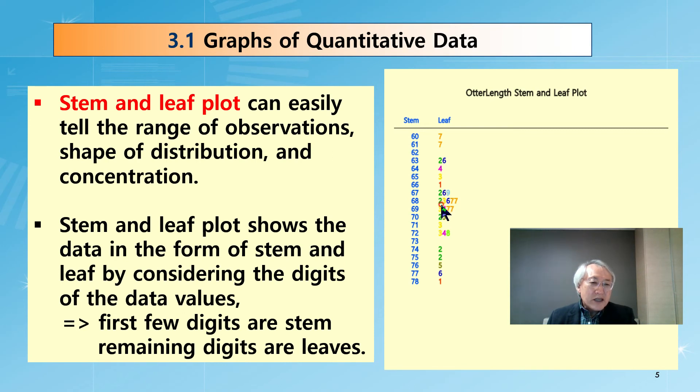The last digits - they say it's 2, 3, 6, 7, 7, 7. That means in this category, there are five data. It looks like a histogram, but we are using the natural grouping by using the decimal digit stem.